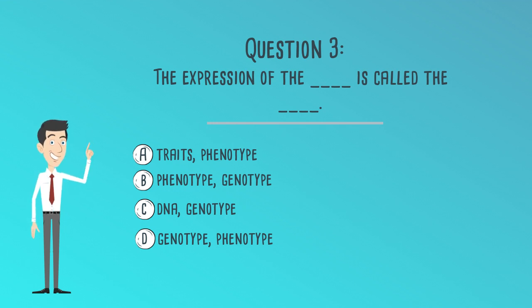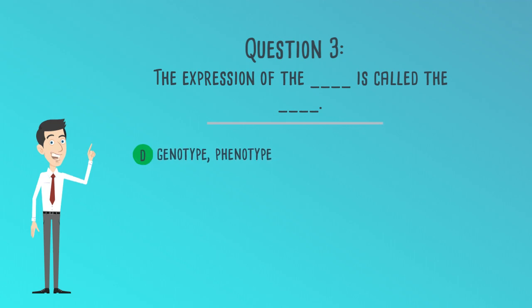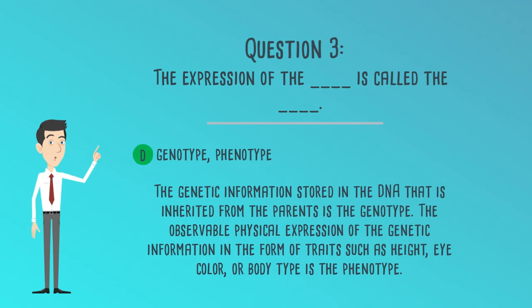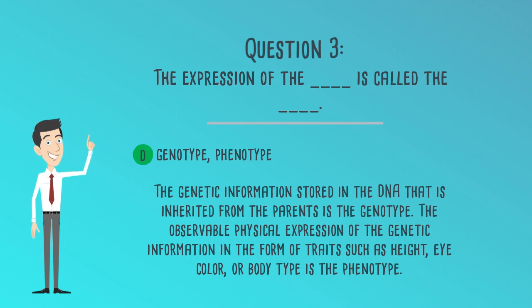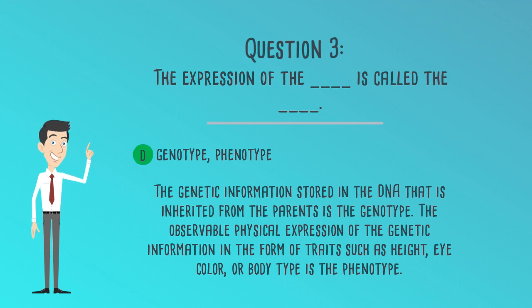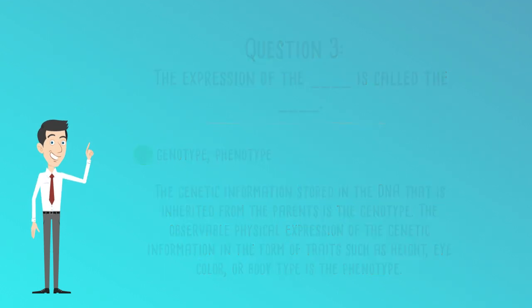The correct answer is D. Genotype, phenotype. The genetic information stored in the DNA that is inherited from the parents is the genotype. The observable physical expression of the genetic information in the form of traits, such as height, eye color, or body type, is the phenotype.